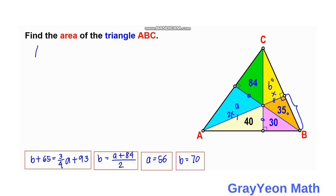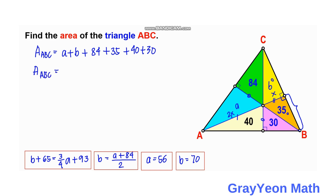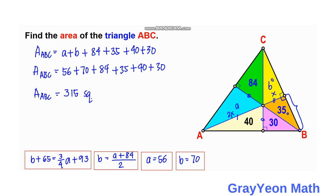Now for the final step: the area of triangle ABC equals the sum of all six parts. That is A + B + 84 + 35 + 40 + 30 = 56 + 70 + 84 + 35 + 40 + 30, which gives us the area of triangle ABC equal to 315 square units.